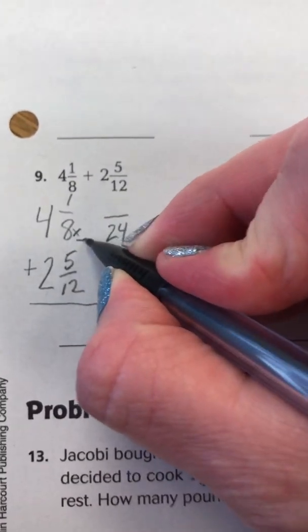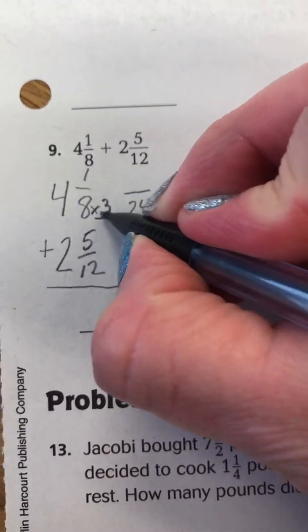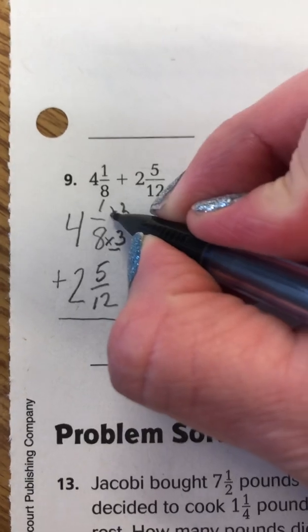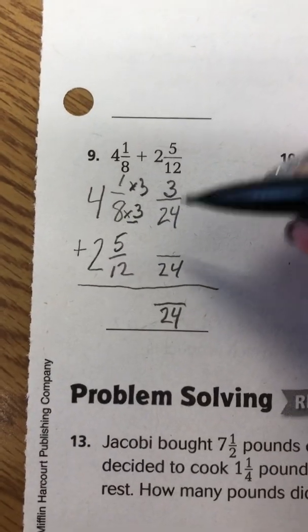So you just ask yourself, what did I multiply 8 by to get 24? We multiplied 8 by 3 to get 24. So whatever you do to the bottom, you have to do to the top. So 1 times 3 is 3. So 1 eighth becomes 3 twenty-fourths.